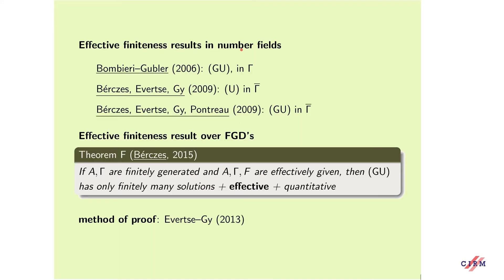Effective finiteness results over number fields. First Bombieri and Gubler, and later Bérczes-Evertse and myself, and then Bérczes-Evertse-Pontikos and myself proved these results in an effective form in Gamma, in Gamma-bar, and so on. Finally, Bérczes-Evertse in 2015 proved in full generality the following effective result: if A, G, and Gamma are finitely generated and A, Gamma, and F are effectively given, then the GUE has only finitely many solutions, and they gave an effective quantitative version.